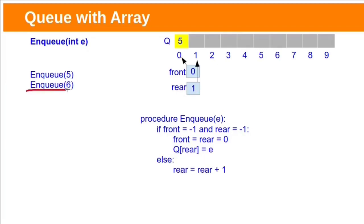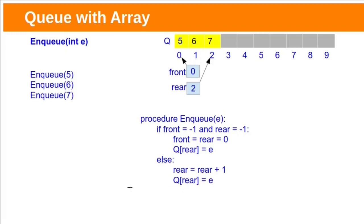For the next Enqueue operation, Rear will be incremented to 1, then element 6 is added at Rear index 1. The else condition is used when the queue is not empty — in that case we only increment Rear, then add the element to the queue at index Rear. Let's assume we perform one more Enqueue operation. These are the queue contents after these 3 Enqueue operations. Now Rear is at index 2.